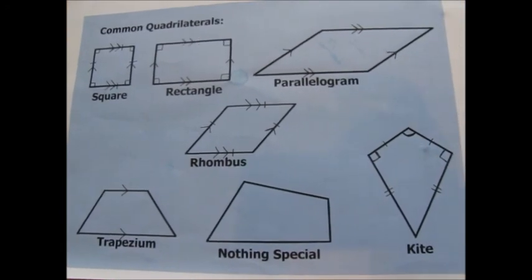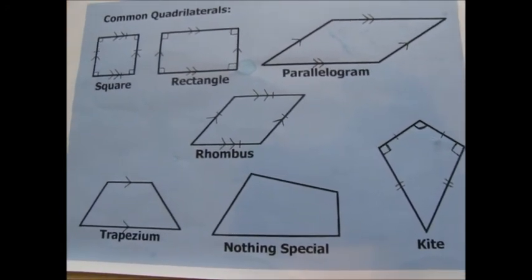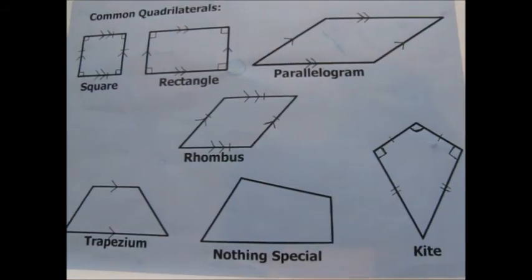So those are all the quadrilaterals. Hopefully you can now identify parallelograms, rectangles, squares, rhombi, trapezium, nothing special, kites and arrows. Well done! If you're from my school, come and see me and I'll give you a special certificate for your specialist knowledge. Stay tuned for lesson two on 3D shapes.